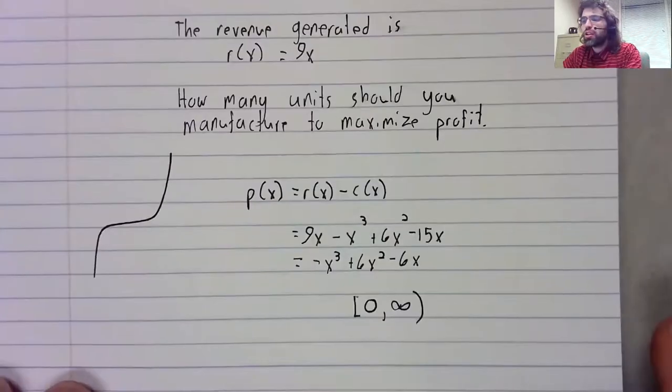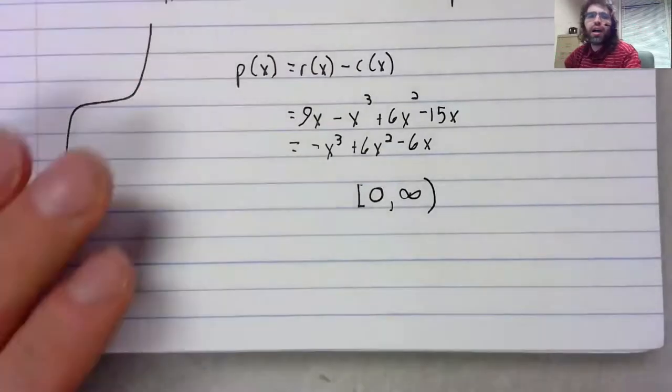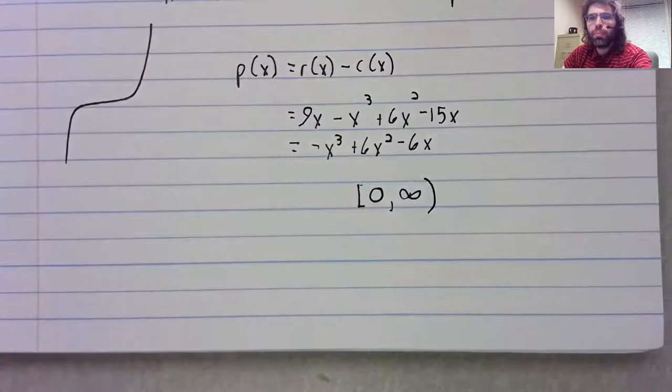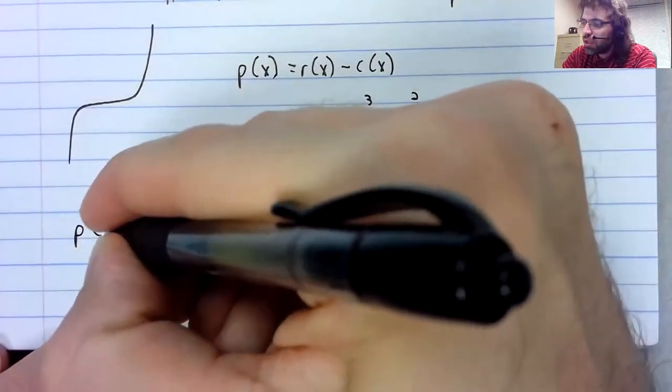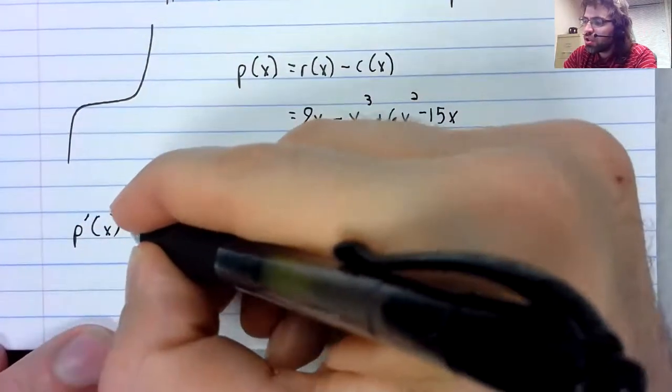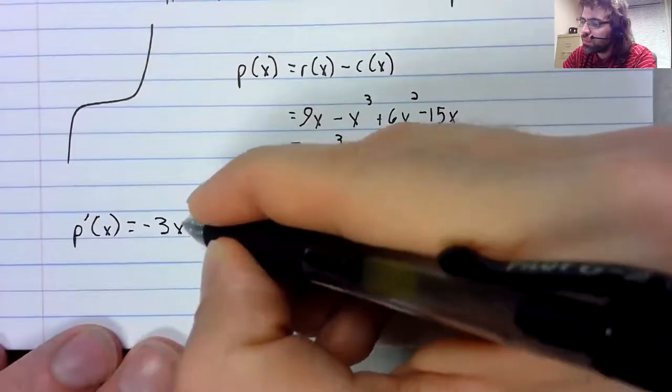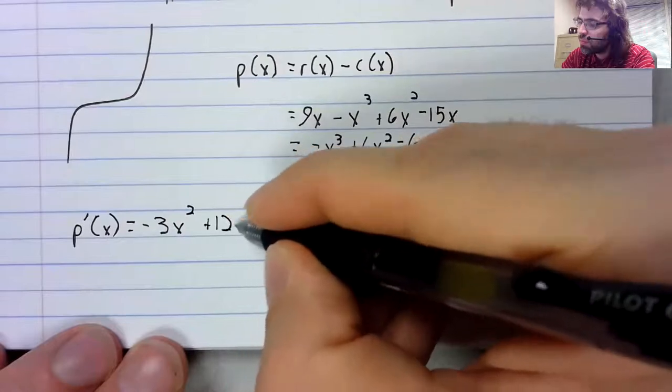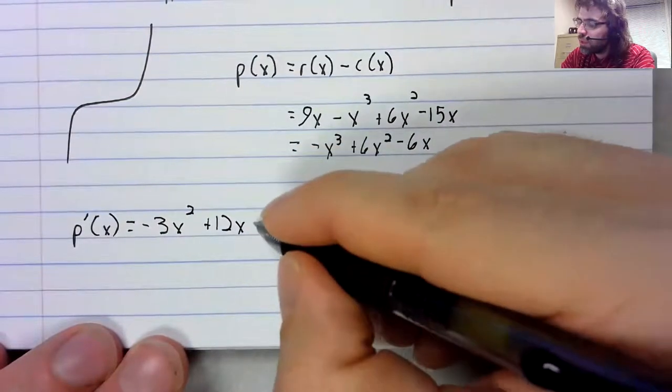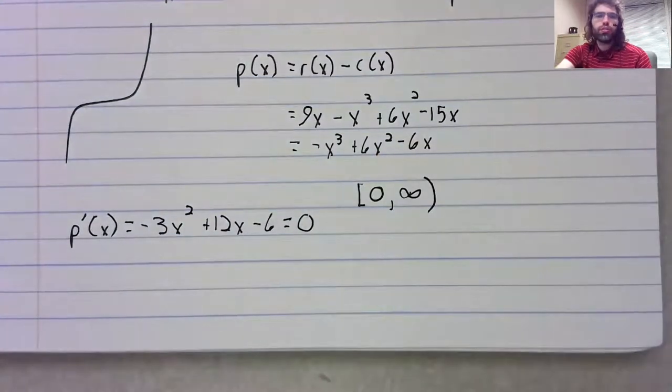And once we've done that, we can now proceed and try to find this local maximum, which is also an absolute maximum. We take the derivative and we set it equal to zero.